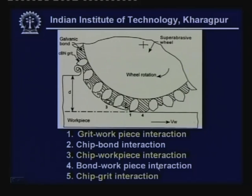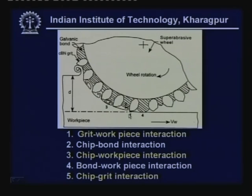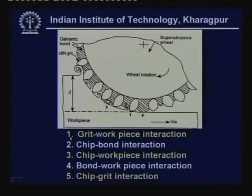Looking more closely at how the grinding wheel functions: each grit serves like a cutting tool imparted with a cutting velocity Vs, while the feed velocity Vw moves the workpiece. Considering a particular grit engaged in chip formation, the number one interaction is the grit-workpiece interaction, which is the individual interaction leading to chip formation.